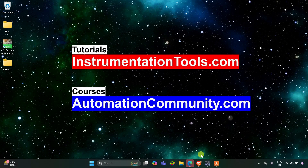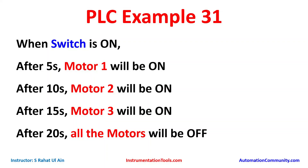Hello everyone, welcome to Automation Community. Today in this video we are going to discuss another example in which we will be controlling three motors. We will also be using some timers like On Delay Timer and Pulse Timer. Let's look at the example first. Example 31: when the switch is on, after 5 seconds Motor 1 will be on, after 10 seconds Motor 2 will be on, after 15 seconds Motor 3 will be on, and after 20 seconds all the motors will be off.